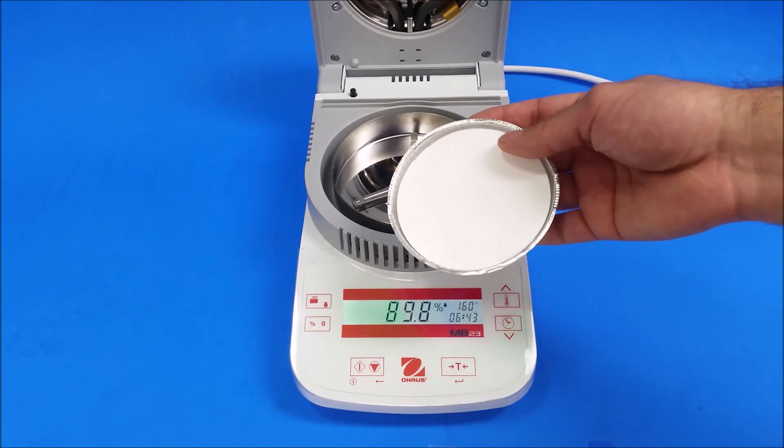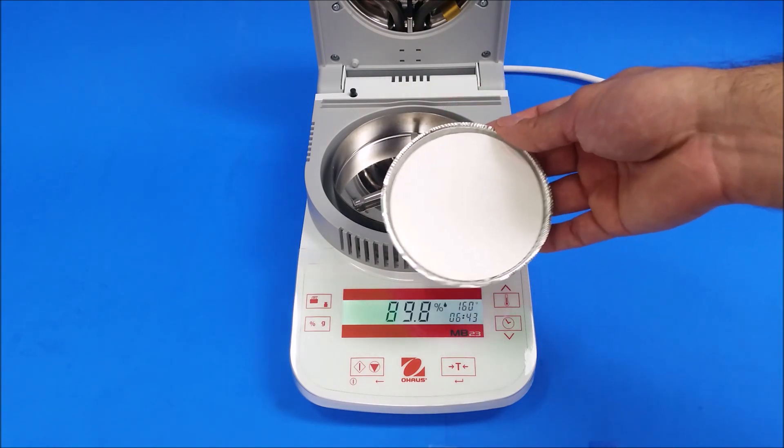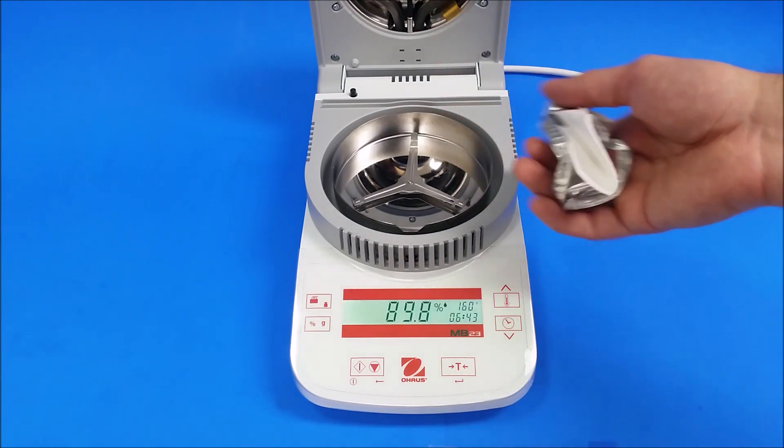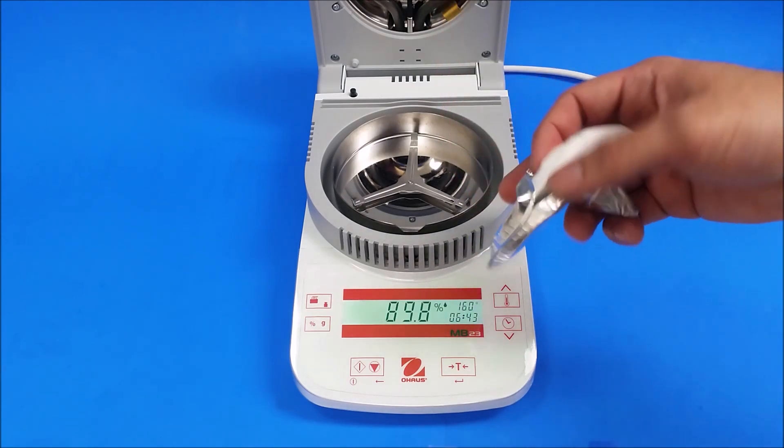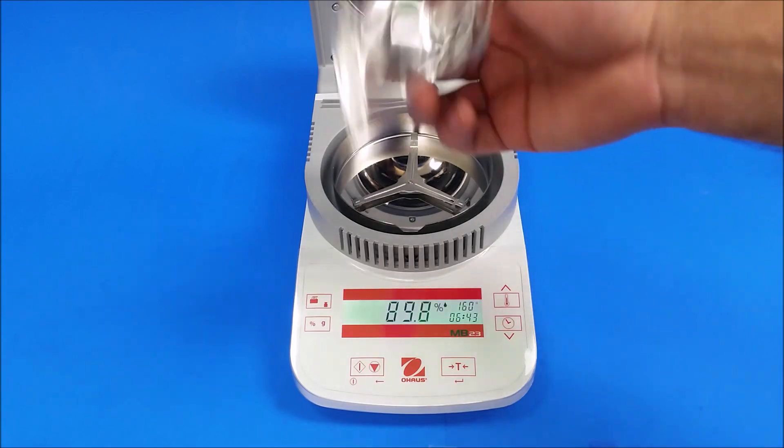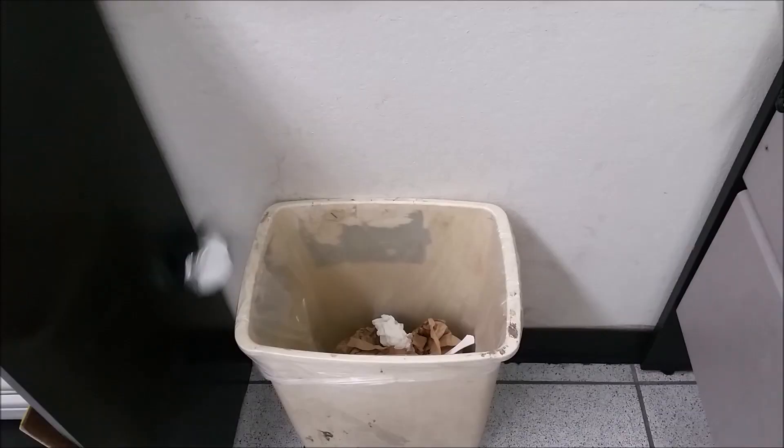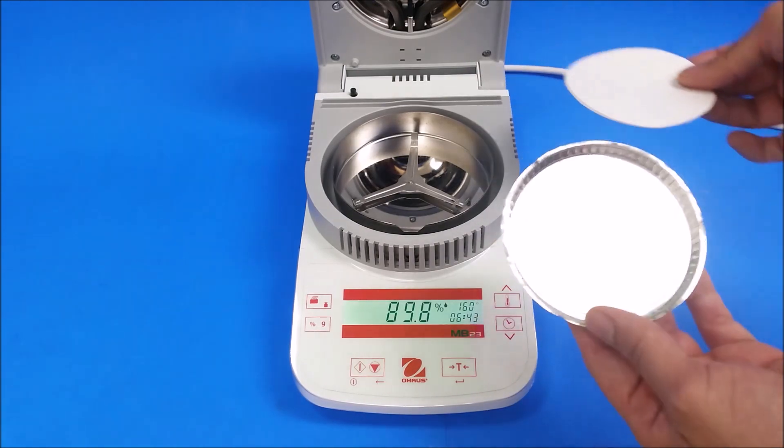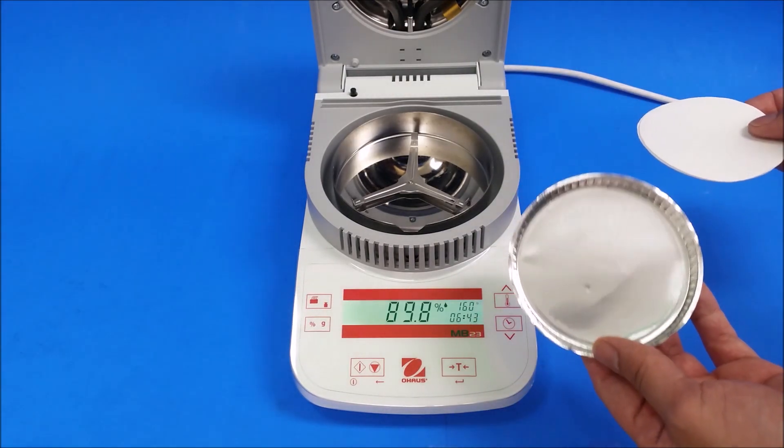You see it looks like you could reuse it again. Don't use it again. This is trash. Always get new dishes and new pads. So this is trash. You only need to get another one - two pads and another aluminum dish.